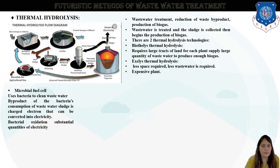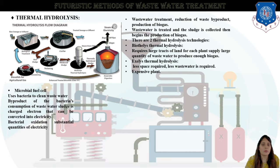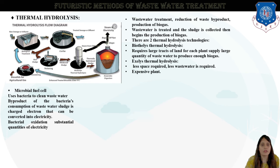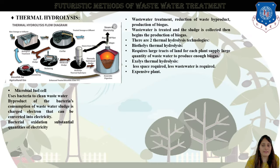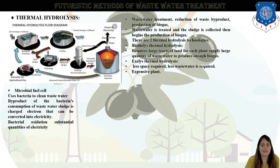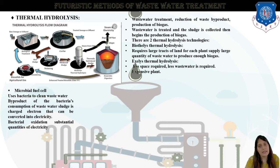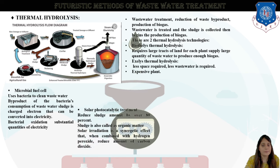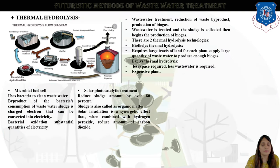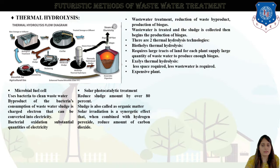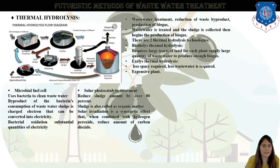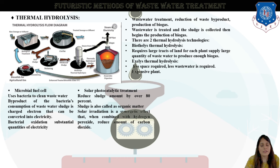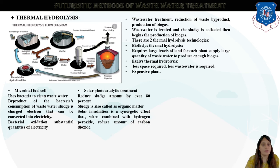Next is the microbial fuel cell. Do not get mixed up between water purification techniques and wastewater purification techniques — they are different. In the microbial fuel cell, bacteria are used to clean wastewater. Byproducts of bacteria consuming wastewater sludge are charged electrons, which can be converted into electricity. Next is solar photocatalytic treatment — it reduces the sludge amount by 80%. Sludge is the organic matter byproduct and residue left in wastewater. It is combined with hydrogen peroxide to reduce the amount of carbon dioxide produced.